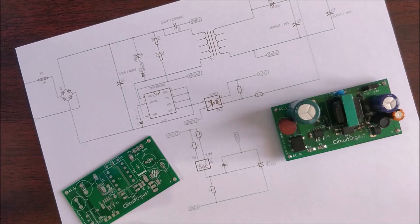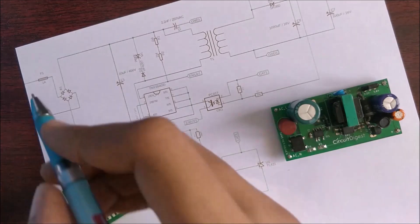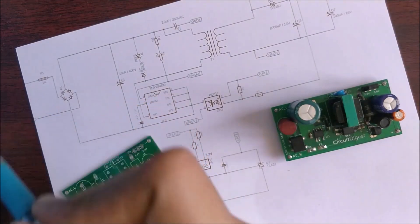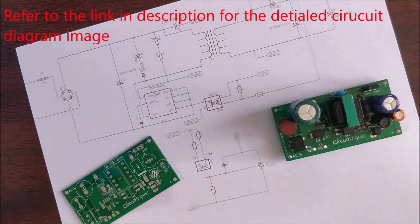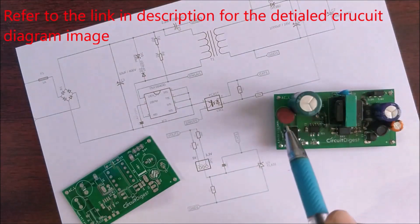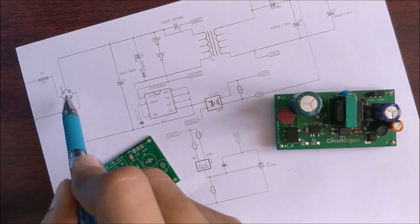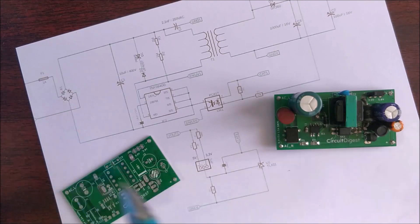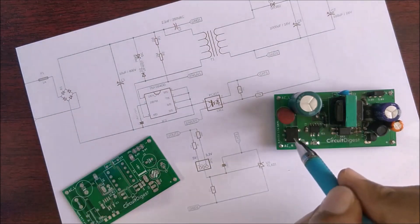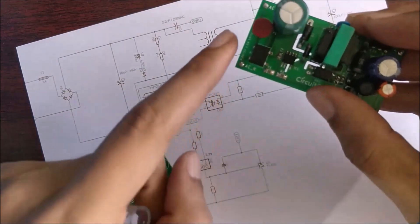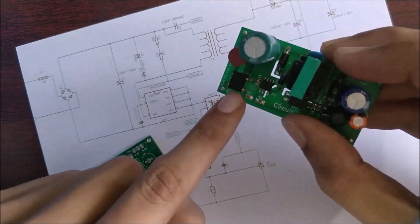Coming back to the circuit, starting from the input side we have our fuse over here which is a slow blow fuse rated for 230 volts and 1 amp. On our hardware you can see our fuse over here, and then from the fuse we have a bridge rectifier which is DB107. We have a fuse and then a bridge rectifier.